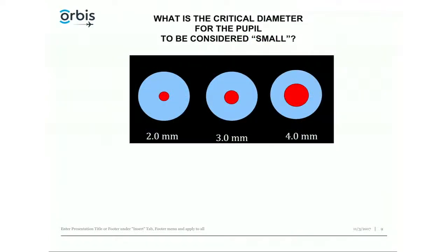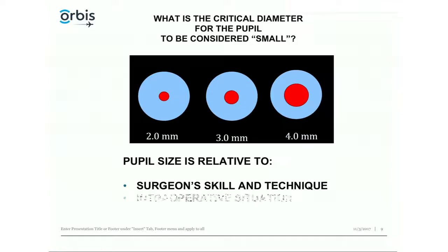What constitutes a small pupil? A 2 mm pupil is definitely small by any standard; 3 mm is also small; 4 mm may be manageable depending on expertise. Pupil size is thus relative to the surgeon's skills, techniques, and intraoperative situation — including at what stage of phaco you are when the problem arises.